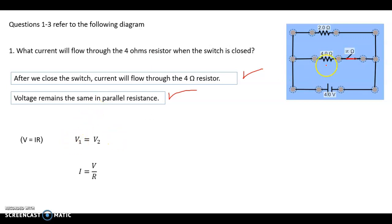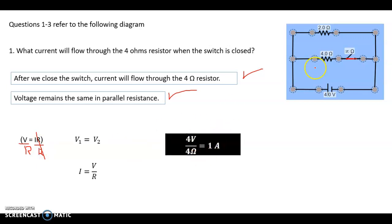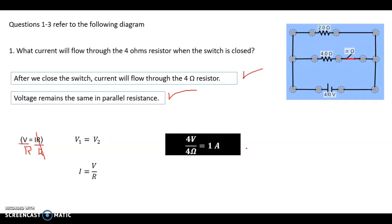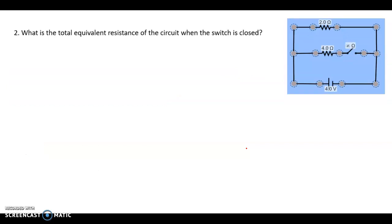Since V1 equals V2, we solve for I by dividing by R in each case. We have the voltage — four volts — and the resistance — four ohms — so four divided by four gives us one ampere. As we saw in the simulation, the answer is one amp. This is the answer for question one. If question one was wrong, the second and third questions would also be wrong, so be careful.